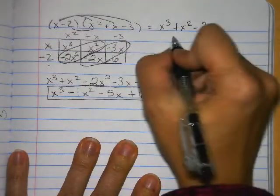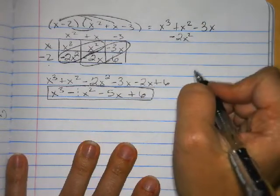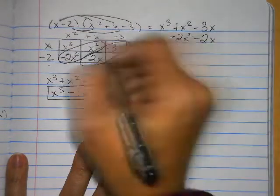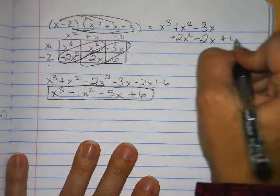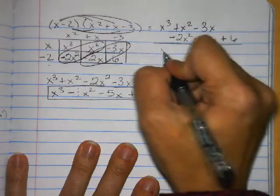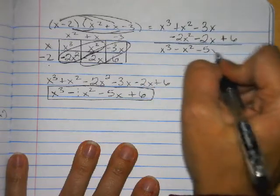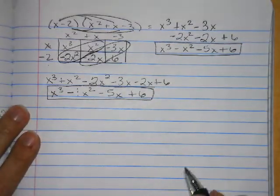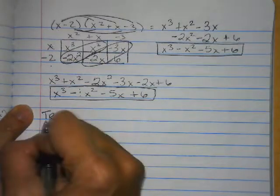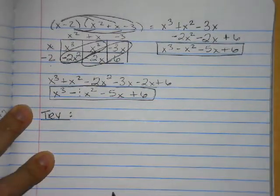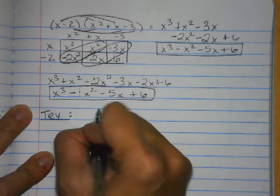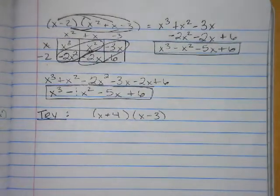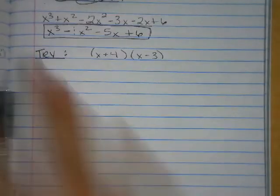I'm going to write this vertically so I can combine like terms, because I know I'm going to have to do that multiple times. Negative 2 times x is negative 2x. And negative 2 times negative 3 is positive 6. So now I can just look vertically: x cubed minus x squared minus 5x plus 6. I'd like you to try this one — let's try x plus 4 times x minus 3 — and we'll come back together in class tomorrow and see how you did.